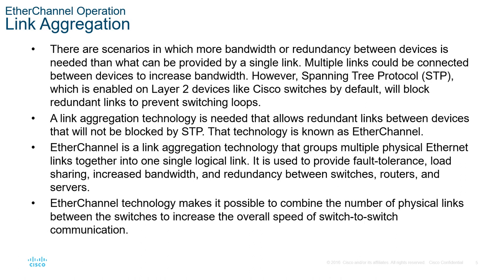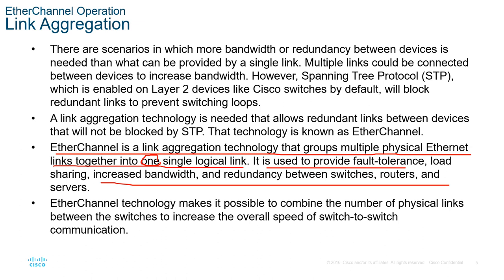We bundle multiple physical ports, creating a single logical link. EtherChannel is a link aggregation technology that groups multiple physical Ethernet links together into one single logical link. Since it looks like one link or connection, the other physical links will not be blocked. So it is used to provide fault tolerance, load sharing, and increased bandwidth, and you have physical redundancy between switches, routers, and servers.